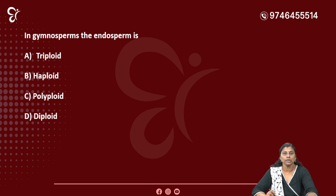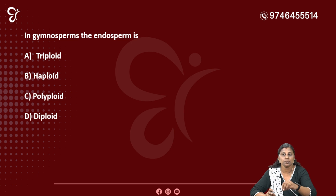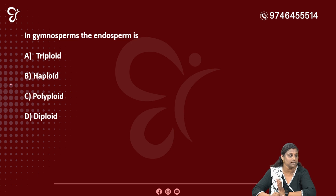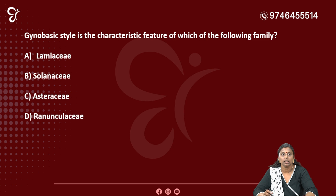In Gymnosperms, the endosperm — this is very important. The options are: Triploid, Haploid, Polyploid, or Diploid. The endosperm in gymnosperms is Haploid, as it is like the female gametophyte. So haploid endosperm is characteristic of gymnosperms.